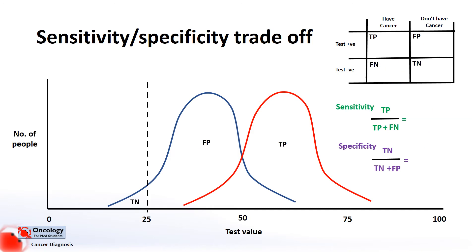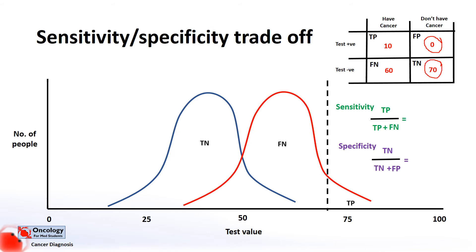On the other hand, we could say we want a test that minimises the number of people who are wrongly given a positive result and have to go on for further testing — this would be a highly specific test. We could do this by moving the threshold higher to the right on the graph. We've eliminated false positives and increased true negatives, meaning the test won't send as many people without the disease for further testing. However, we now have a far higher proportion of false negatives. By increasing the specificity, we lose sensitivity and therefore miss more people who have the disease. This problem, whereby as one increases the other decreases, is known as the sensitivity-specificity trade-off.